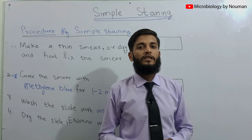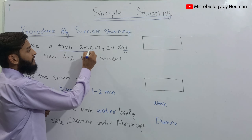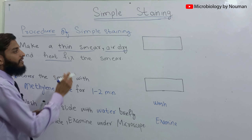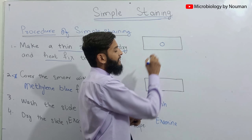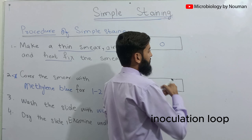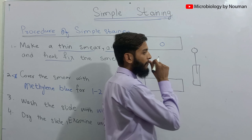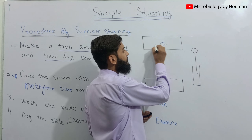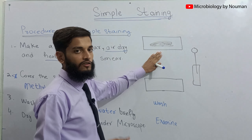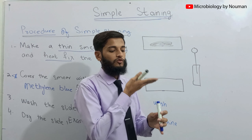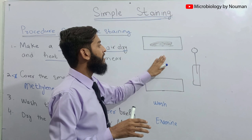The procedure for simple staining is very easy. First, we make a thin smear — we take a clean glass slide and place a drop of water in the center. Then with the help of an inoculating loop, also known as a wire loop, we pick up a bacterial colony and mix it with the water on the slide. After mixing, we wait until all the water evaporates, then pass the slide two to three times over a flame to heat-fix the bacteria onto the surface of the slide. This heat fixation process also kills the bacteria.